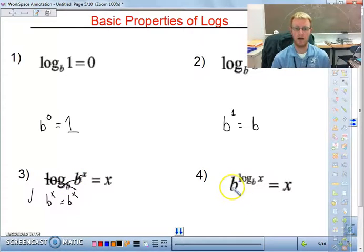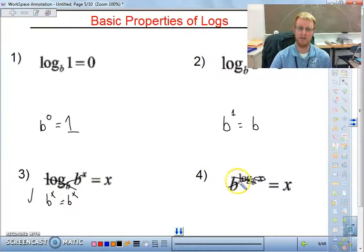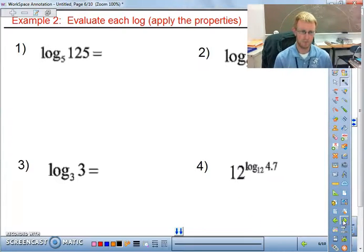Over here, same idea. A power or a base of an exponent of b and a log base b will also cancel out, and then we're just left with x equals x. So that's why it's equal to x. Okay, so log base b of b will cancel out, and b to the power of log base b will always cancel out.